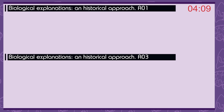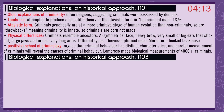Biological explanations — a historical approach. Older explanations of criminality were often religious, suggesting criminals were possessed by demons. Lombroso attempted to produce a scientific theory of the atavistic form, published in the Criminal Man in 1876. The atavistic form means criminals genetically are at a more primitive stage of human evolution than non-criminals — so are throwbacks — meaning criminality is innate, so criminals are born, not made. Physical differences: criminals are thought to resemble ancestors. They have asymmetrical faces, heavy brows, very small or big ears that stick out, large jaws, and excessively long arms. Different types of criminals can be identified: thieves have upturned noses and murderers have hooked beak noses. The positive school of criminology argues that criminal behaviour has distinct characteristics and careful measurement of criminals will reveal the causes of criminal behaviour.